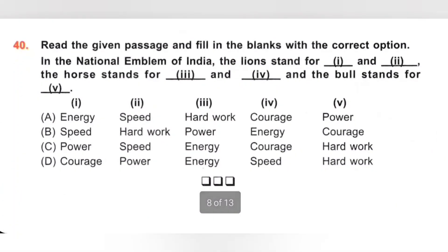40th. Read the given passage and fill in the blanks. In the National Emblem of India, the lion stands for courage and power, the horse stands for energy and speed, and the bull stands for hard work. Option D is the correct answer.